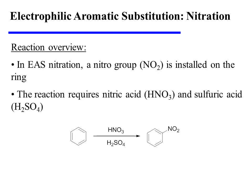In EAS nitration, a nitro group is installed on the ring. The reaction requires nitric and sulfuric acid.